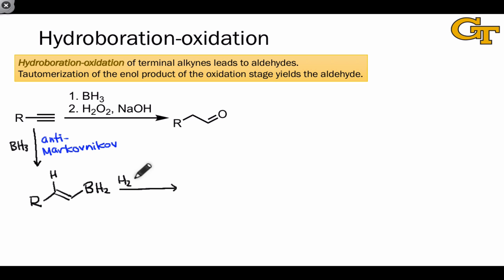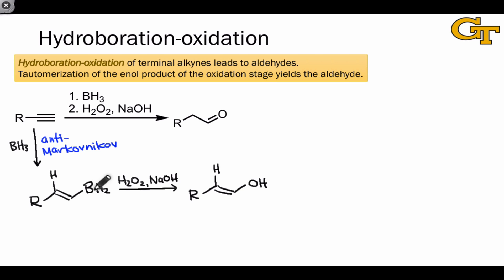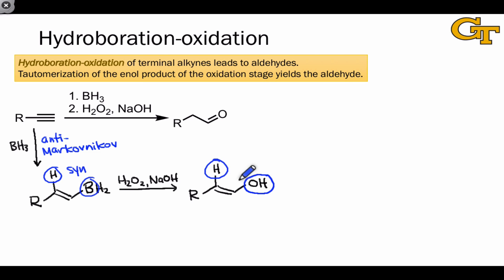Oxidation of the alkenyl borane with the usual conditions — H2O2 and sodium hydroxide or some other hydroxide source — gives rise to an enol. One thing to note here is that since addition of H and boron in the first step occurs with syn stereospecificity and oxidation retains configuration — in other words, oxygen simply swaps out positions with boron — the product enol contains the newly added OH and H in a syn position as well.